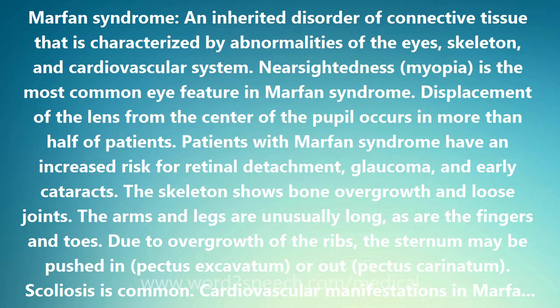Marfan syndrome is inherited in an autosomal-dominant manner and is caused by mutation in the FBN1 gene that encodes fibrillin-1. About 75% of people with Marfan syndrome have an affected parent, and 25% have a new gene mutation. Pregnancy can be dangerous for women with Marfan syndrome because the aorta can widen.